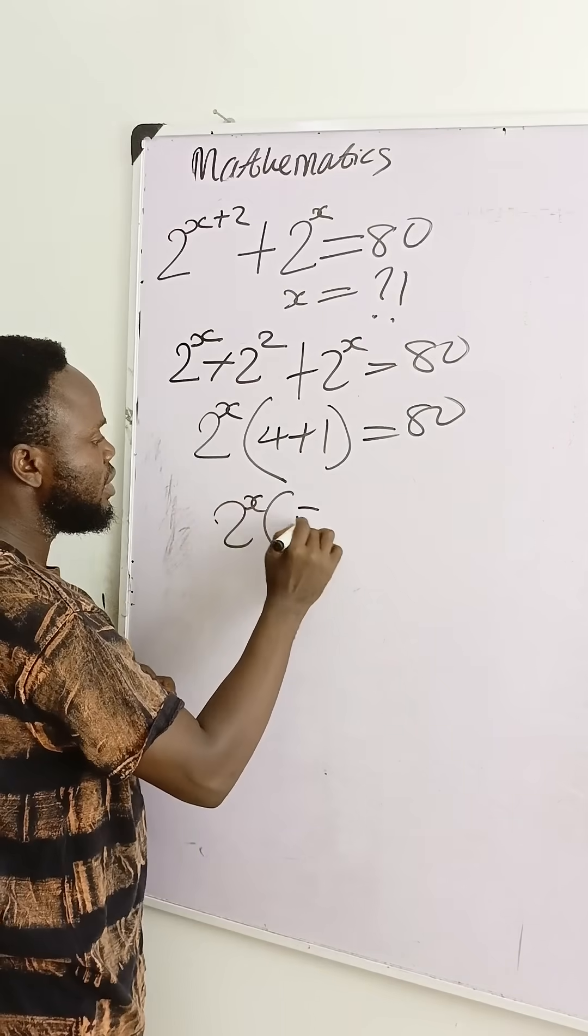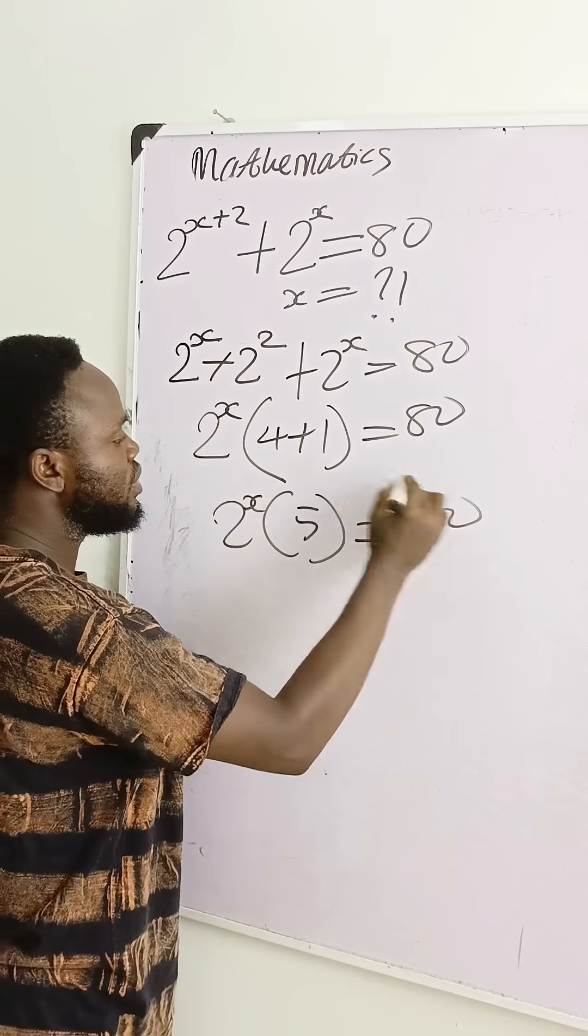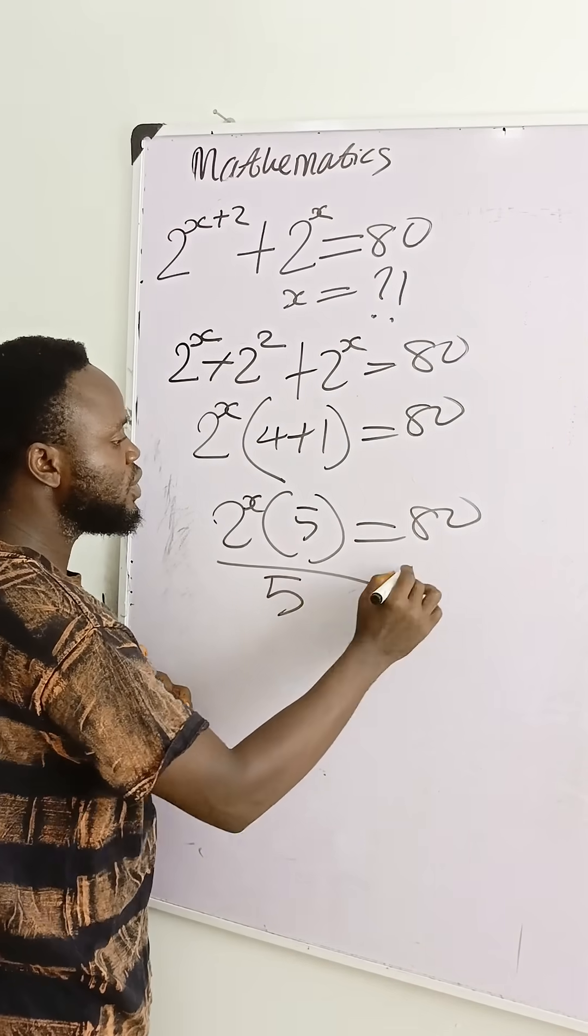Then 2 power x. This one is 5 is equal to what? 80. You divide both sides by 5.